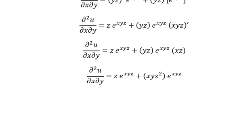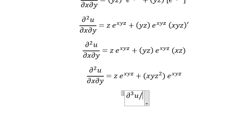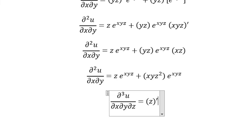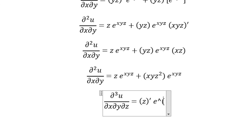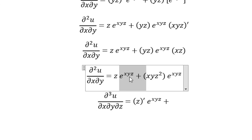And the last one — we do the first derivative of u with respect to z. We apply the product rule of derivative, taking the first derivative of z and then the first derivative of e to the power of xyz.